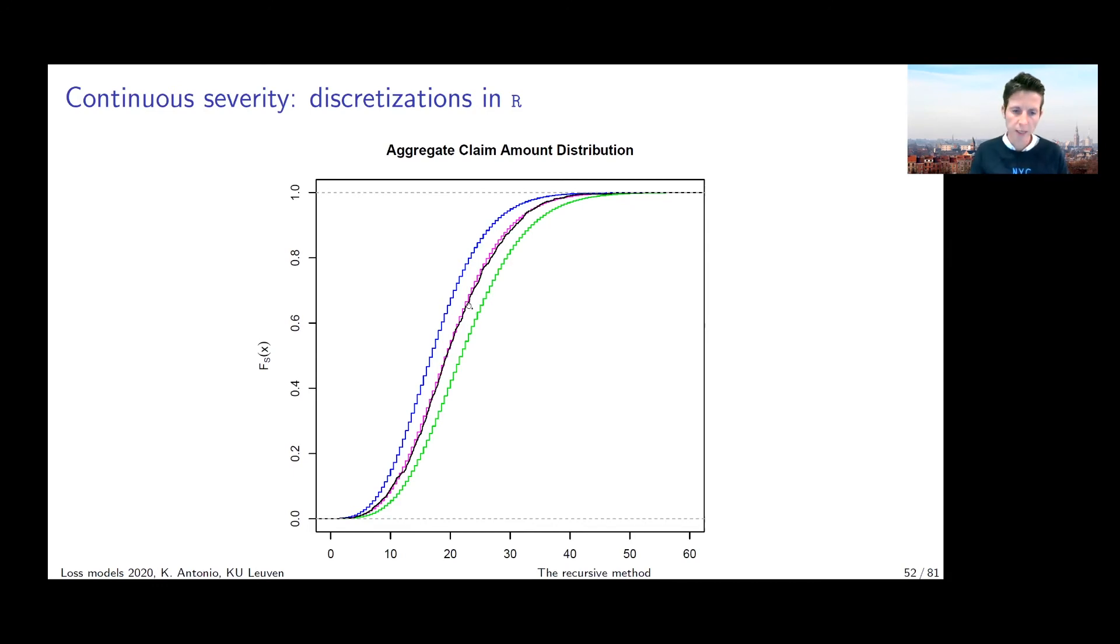Then if you look at the magenta and the red lines, magenta and red will be very close to each other. That's what I get if I do the Panjer recursion where I use for the severity distribution the arithmetized or the discretized severity distribution that I obtained either with the method of rounding or with the local moment matching technique.